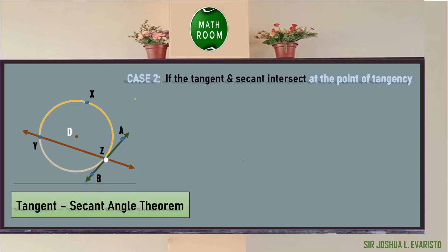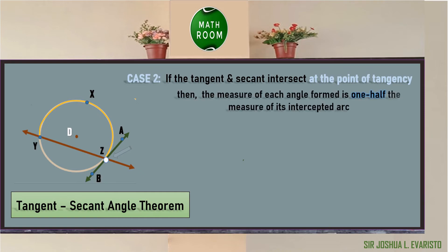Case two: if the tangent and secant intersect at the point of tangency, then the measure of each angle formed is one-half the measure of its intercepted arc. In circle D, the two angles formed are angle YZA and angle YZB. The intercepted arc of angle YZA is arc YXZ, and the intercepted arc of angle YZB is arc YZ. Based on the theorem: angle YZA = one-half of arc YXZ.